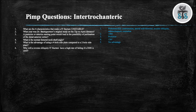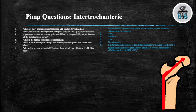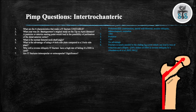Question 6: Why will a reverse obliquity IT fracture have a high rate of failing if a DHS is used? The fracture is nearly parallel to the sliding hip screw, which will lead to loss of reduction and collapse. Question 7: Are IT fractures intracapsular or extracapsular and what is the significance? IT fractures are extracapsular, which leads to better healing potential.